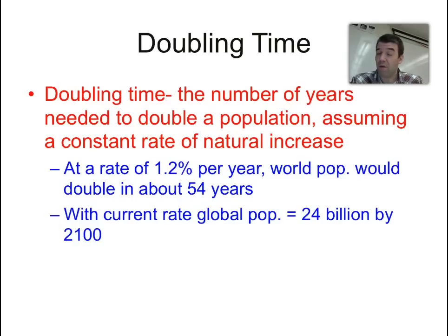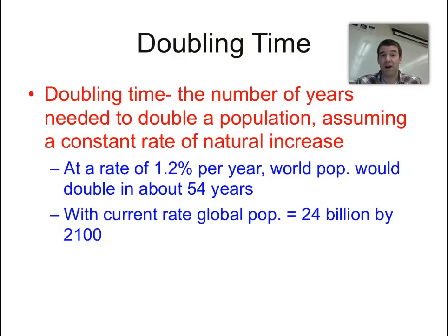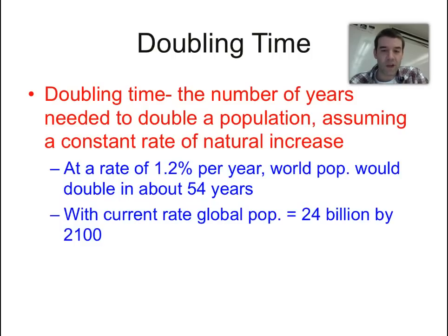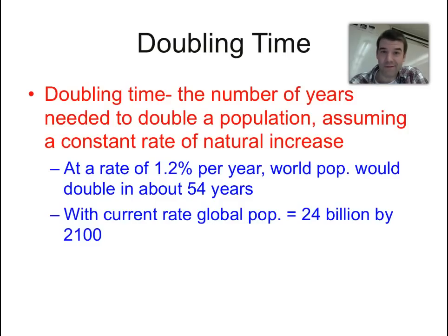Now, we might actually get to 14 billion — there are some other factors at play. Just like population pyramids aren't perfect at predicting the future, neither is the doubling time figure. It's just a simple math equation. If we look at the current rate by 2100, technically it would be up to 24 billion.